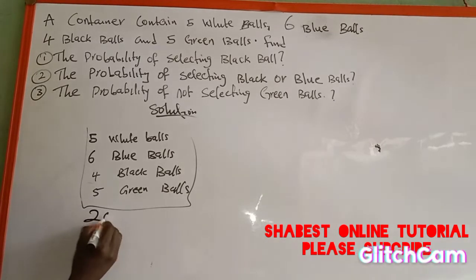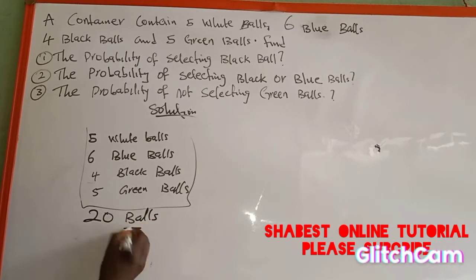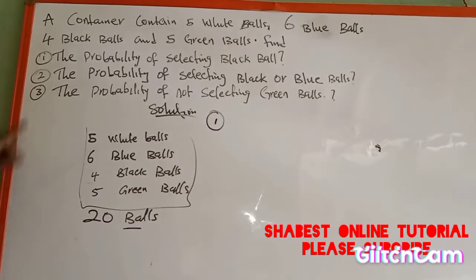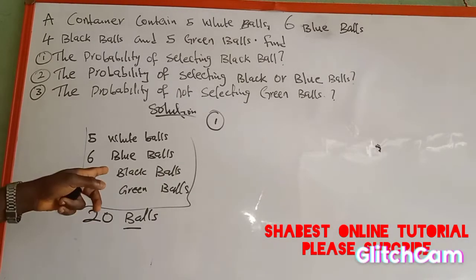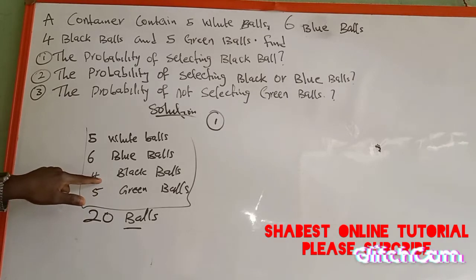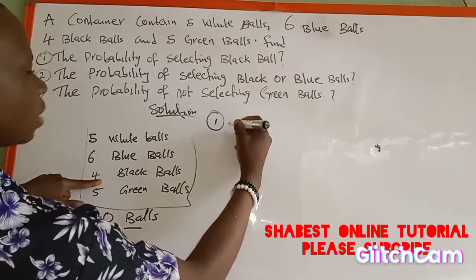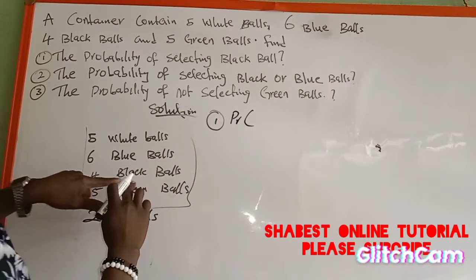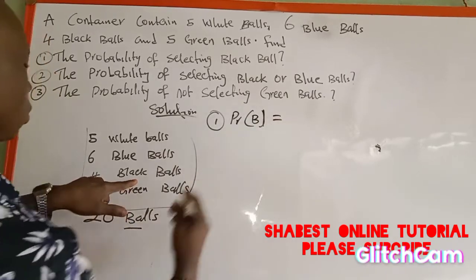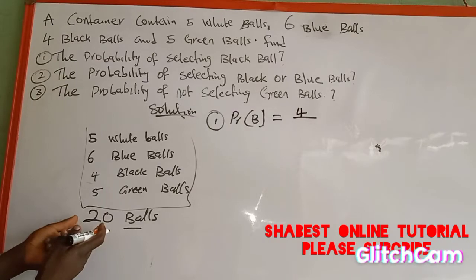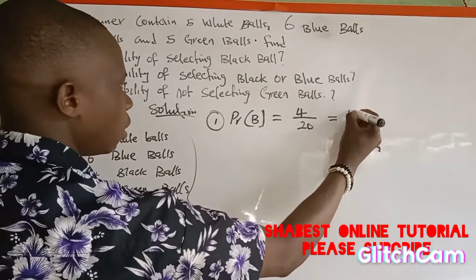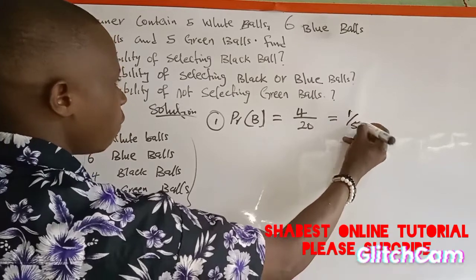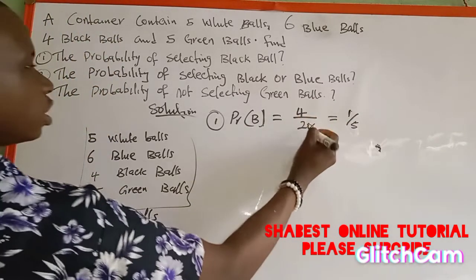For number one, we are asked to find the probability of selecting a black ball only. There are four black balls inside the container. So the probability of selecting a black ball is equal to four over twenty. This four over twenty can be reduced to one over five, because four goes into four one time and four goes into twenty five times.